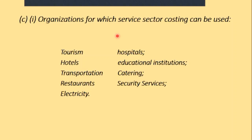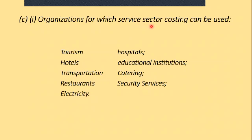Moving to the next slide: different types of organizations in the service sector where costing can be used include museums, tourism, hospitals, hotels, educational institutions such as schools and universities, transportation services like bus services, catering and restaurants, security services, and electricity providers. In fact, any organization which provides a service rather than makes a product can use service sector costing. Usually, service sector organizations use either job costing, depending on the nature of the service, or ABC costing.